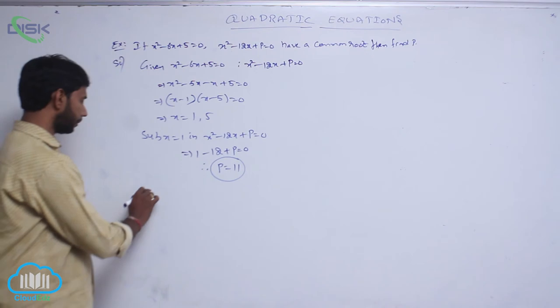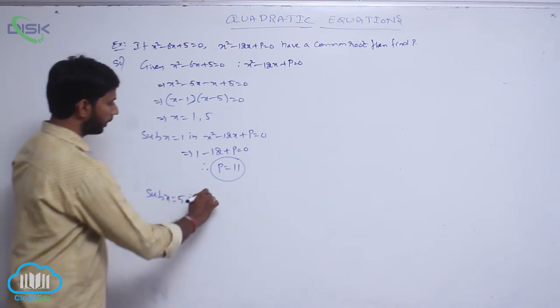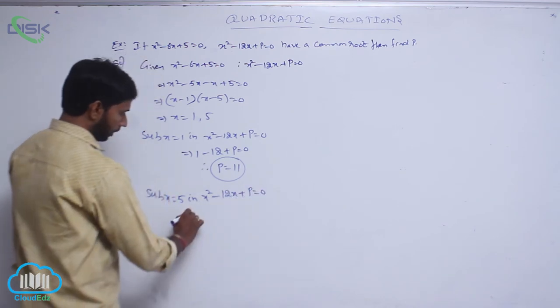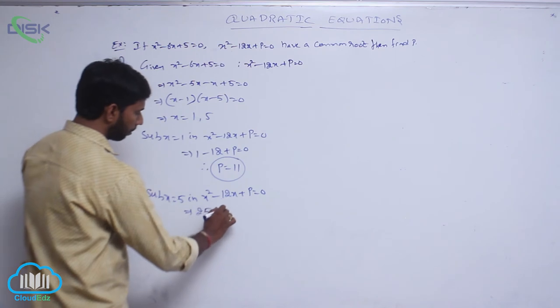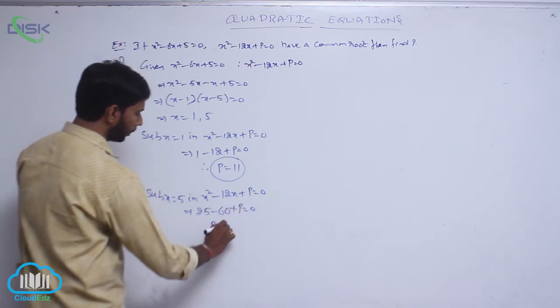Now substitute x = 5 in the second equation, x² - 12x + p = 0. That is 25 - 60 + p = 0, so p = 35.